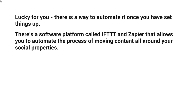There's a software platform called IFTTT and another one called Zapier.com that allows you to automate the process of moving content around your social properties. So you could take a YouTube video and have it pushed — embedded — on your WordPress site, and then shared on your Facebook fan page, your Twitter page, your Instagram, and all of that. You have essentially what we call triggers: whenever the trigger happens, something else happens. IFTTT stands for 'If This Then That' — if this happens, then what.